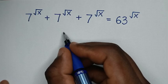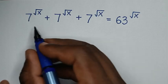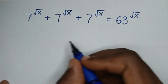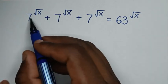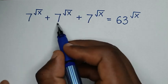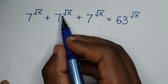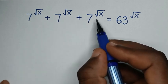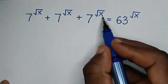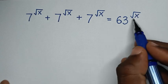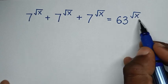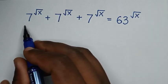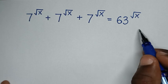Hello, you are welcome to solve this math problem: 7 power square root of x, plus 7 power square root of x, plus 7 power square root of x, is equal to 63 power square root of x. Find the value of x from this equation.